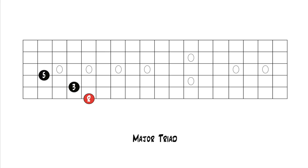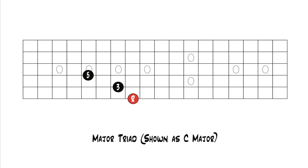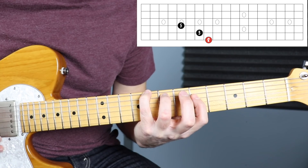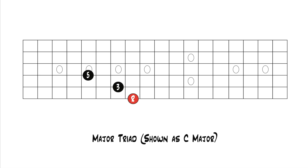I'm showing you intervals, not actual note names, because this shape stays the same no matter what the note names are. For example, if this root note lands on the fifth fret of the sixth string, that's an A note, so this would be an A major triad. But you can move this exact same shape anywhere on the same string sets. If you move it so the root lands on a C, now you have a C major triad. Whatever your root note is, that's the name of the chord.